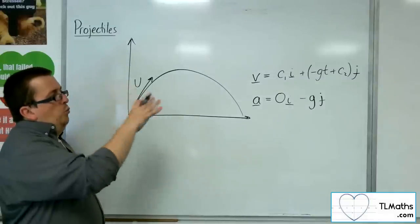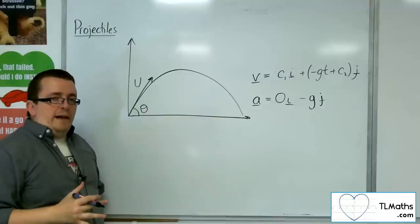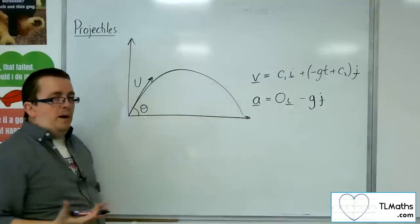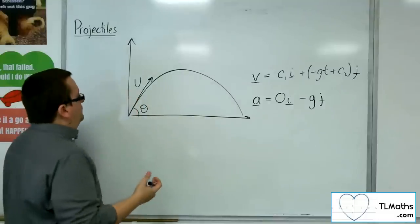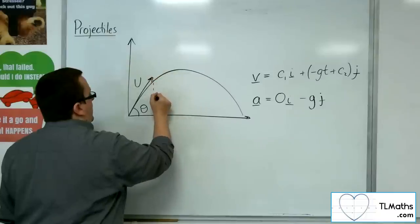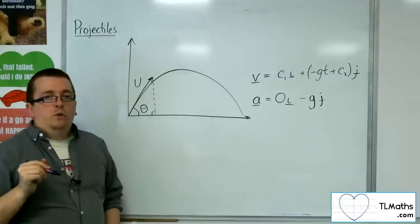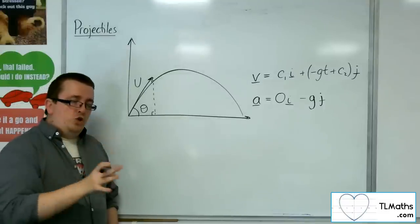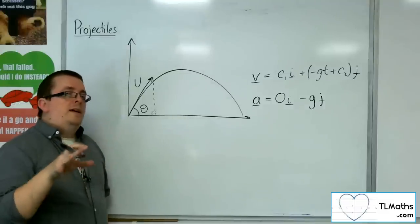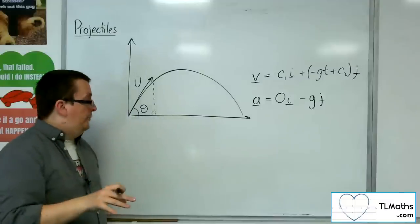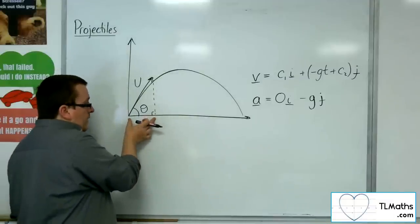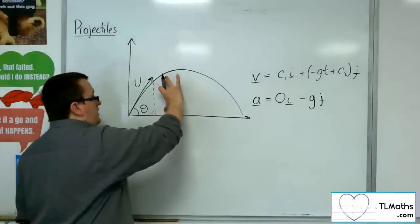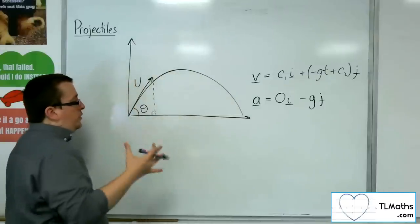Now, what are the initial conditions that we have for this particle? Well, if I drop a perpendicular for that u, then I can represent the initial velocity, u, in its component forms. The length, the base of the triangle and the height of the triangle, using SOHCAHTOA.